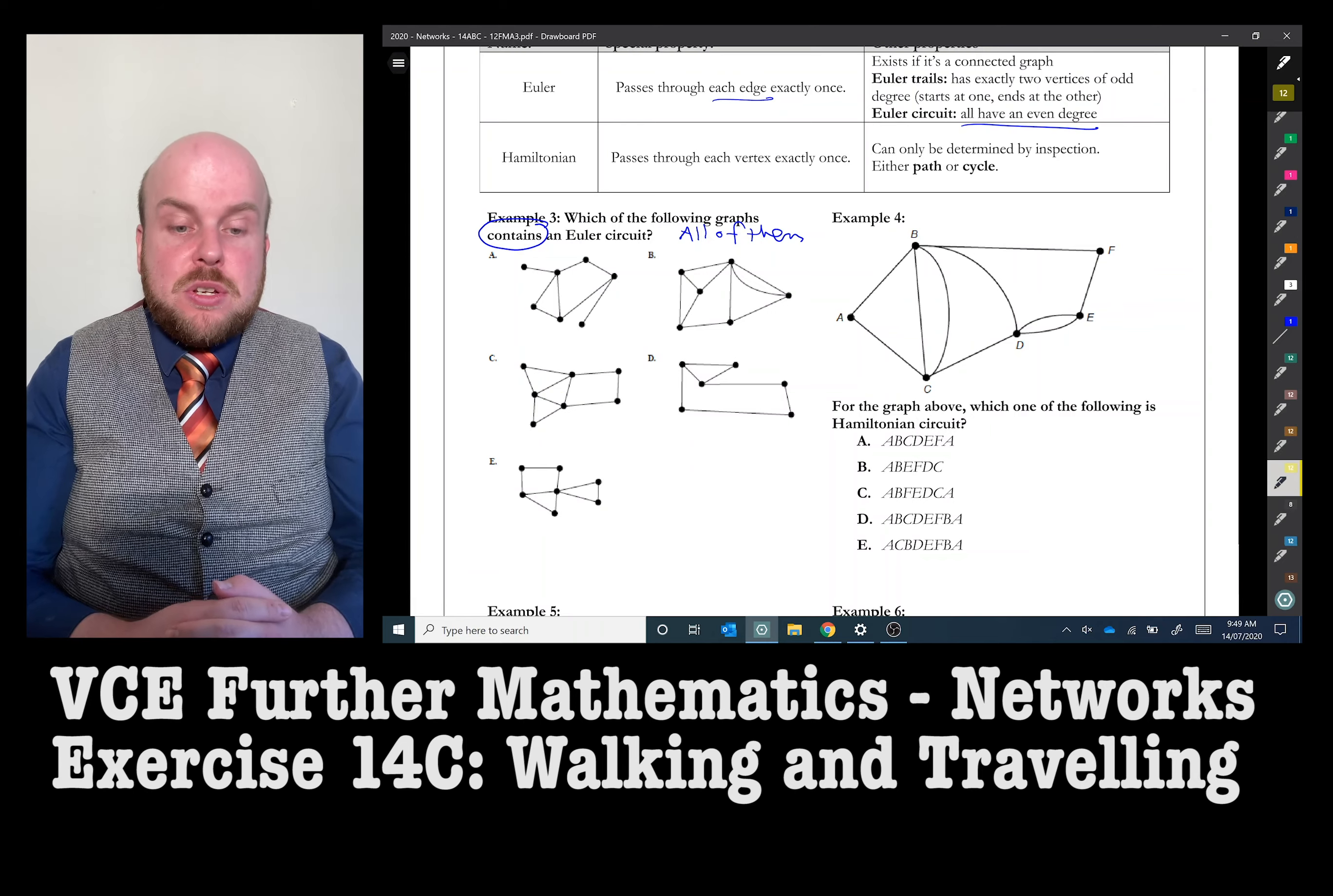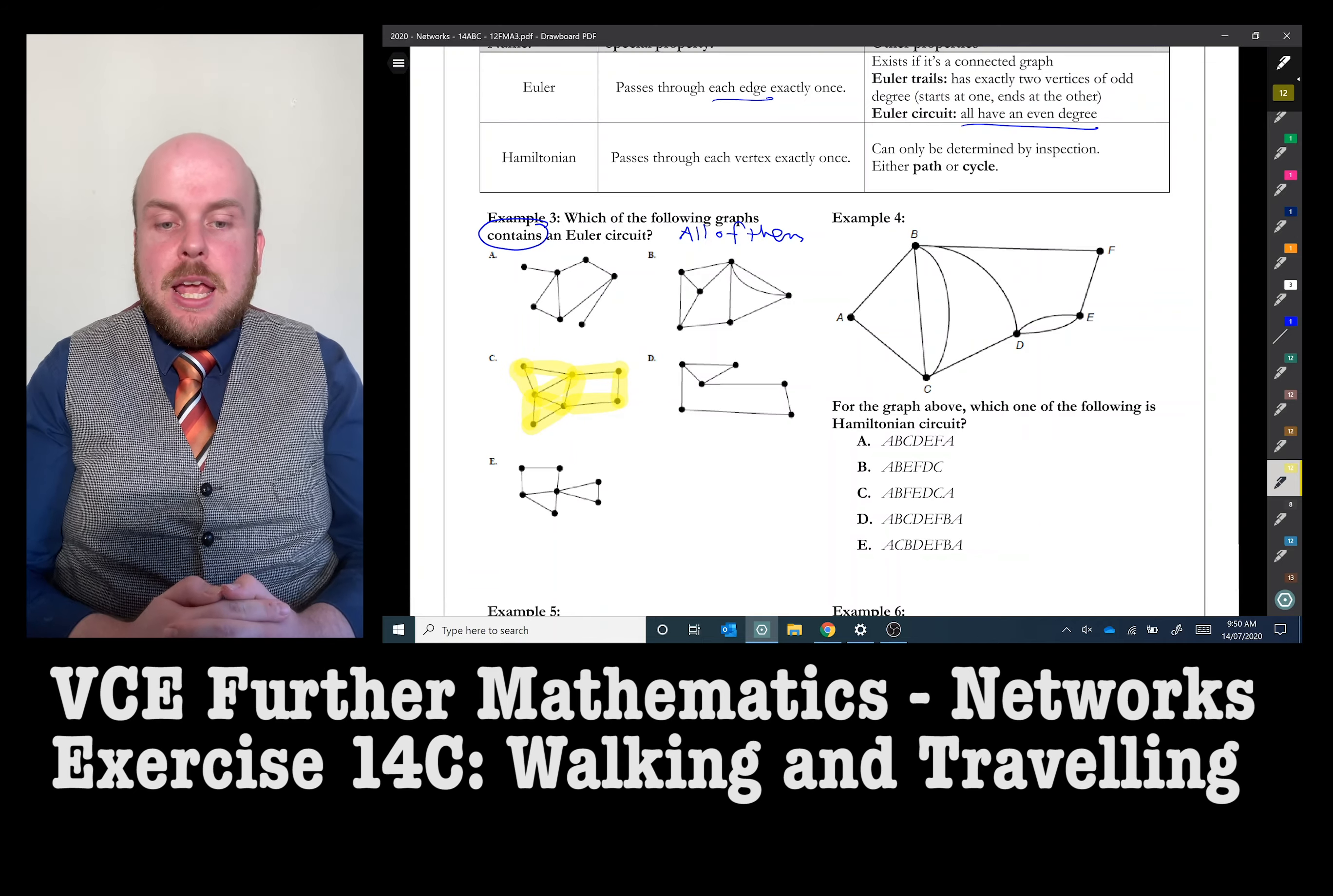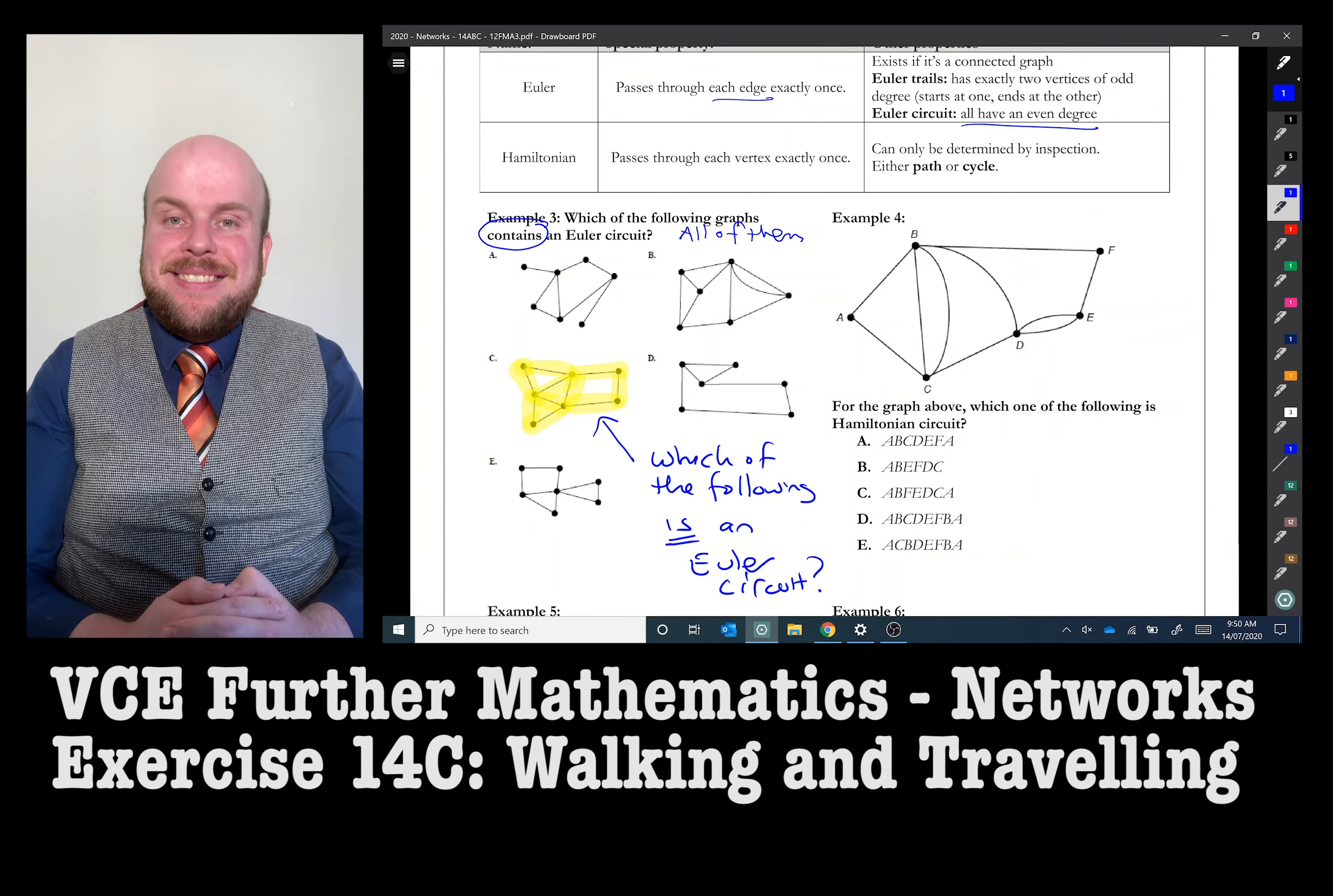In this case, we need to determine which of those networks all have an even degree. Alternatively, if I draw through it, it passes through each edge exactly once. The answer, of course, is C.